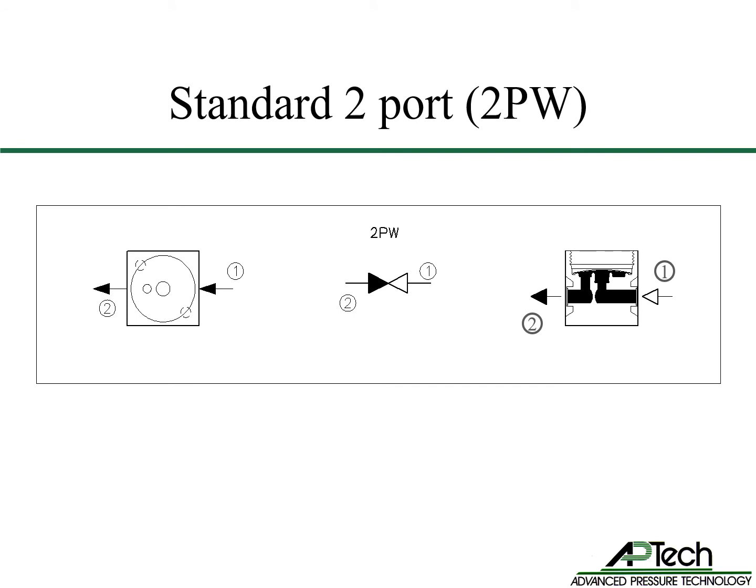These are three images each showing the same 2PW valve with the same porting. The plan view on the left is a view from the top of the valve looking from the actuator side. The gas enters from the inlet, port 1, and exits through the outlet, port 2. The center circle is the seat cavity. The smaller circle to the left is the outlet port. The two circles with dotted lines in the corners are mounting holes on the bottom of the valve. Arrow number 1 flows to the seat cavity, and the outlet port flows to arrow number 2.